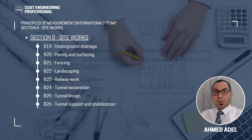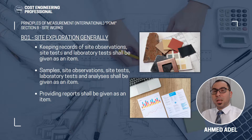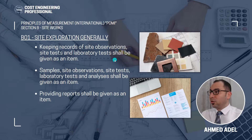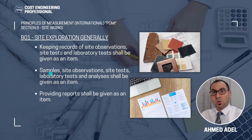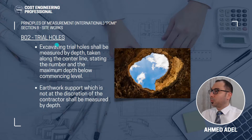As you can see, there are so many subsections and it's impossible to cover them in just one video, so we will be splitting it into parts. Starting with the first subsection — site exploration. Keeping records of site observations, site tests, and laboratory tests shall be given as an item, so the contractor can price for them. Samples, site observations, site tests, laboratory tests and analysis shall also be given as an item, and providing reports shall be given as an item.